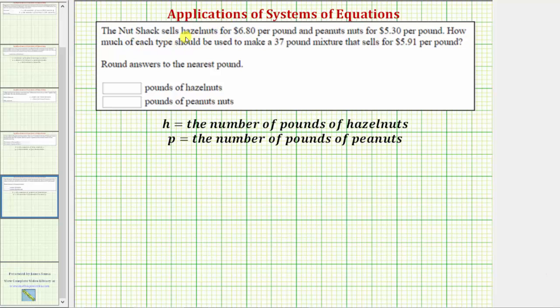The nut shack sells hazelnuts for $6.80 per pound and peanuts for $5.30 per pound. How much of each type should be used to make a 37-pound mixture that sells for $5.01 per pound?